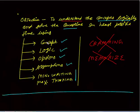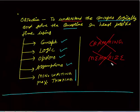Now how can you solve the questions in the least possible time? First, you have to solve the question with concept, or with the help of logic, or with the help of options, or with the help of assumptions. But you have to be careful — you have to write minimum and maximum thinking must be there. I will explain each of these things question by question. But what you don't have to do is cramming and memorization — please don't do that, it will not help you in the aptitude exam.